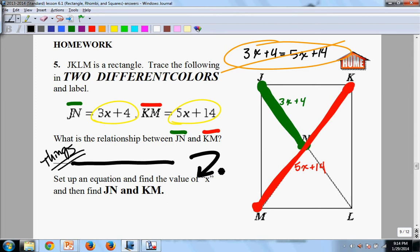Once you've established that relationship, then you set up an equation. Solve for X. Show all your work. Also find the length of JN and KM. Show all your work.